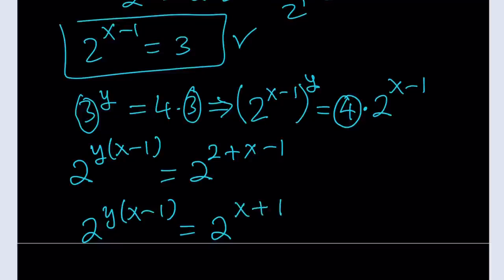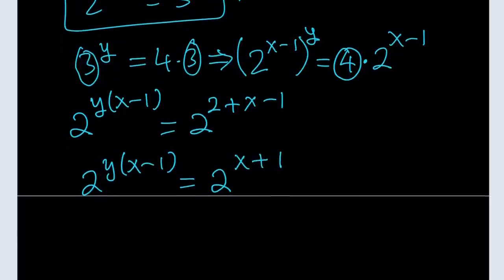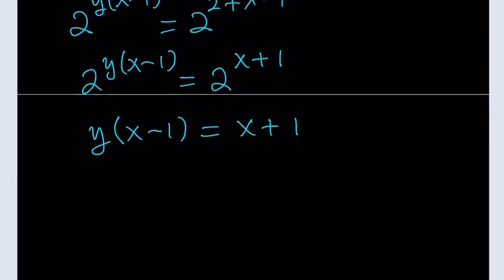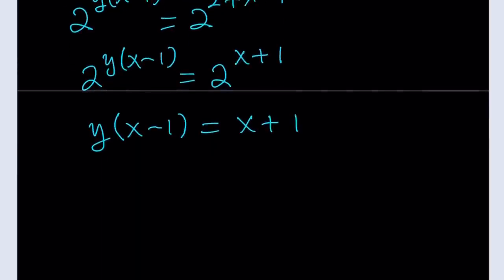Awesome. We got an equation. What is this supposed to mean? This means that we can set the exponents equal because the bases are equal. So now we can safely say that y times x minus 1 is equal to x plus 1. Now, the good thing about not distributing the y is we don't have to factor it again. Now, we can just go ahead and divide both sides by x minus 1.